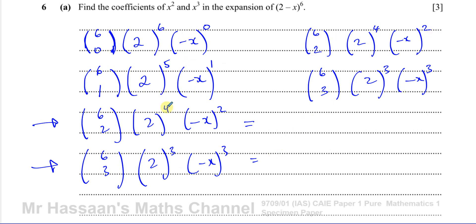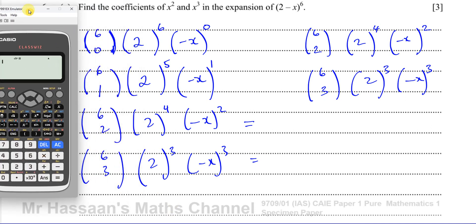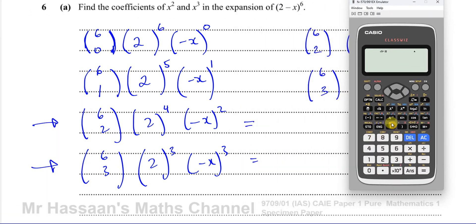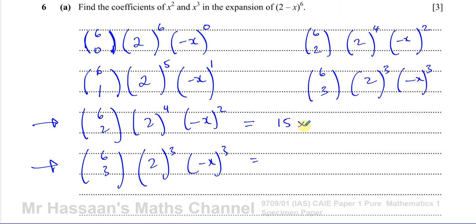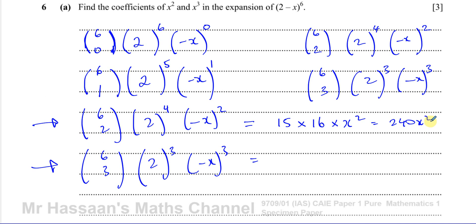So I'm not going to bother finding the first two terms — I'll focus on these two. How do I work out 6C2? I take a calculator and use the NCR button, which is just above the division sign. Press 6, then Shift, then that button, then 2 — that gives 15. So the x squared term is 15 times 2^4, which is 16, times x squared. That's 15 times 16 equals 240x squared.